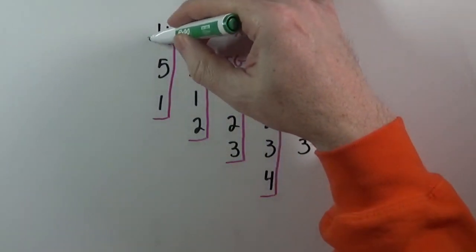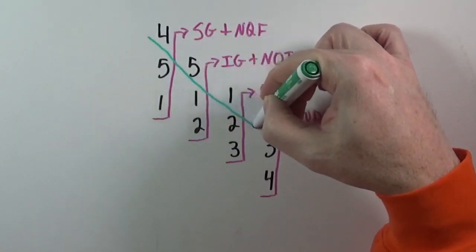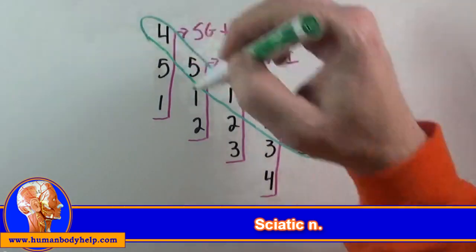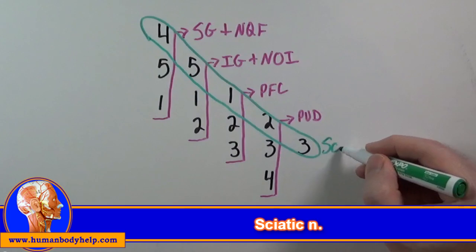Now using a different color, I'll circle all the levels that contribute to the sciatic nerve: L4, L5, S1, S2, and S3. Sciatic nerve.